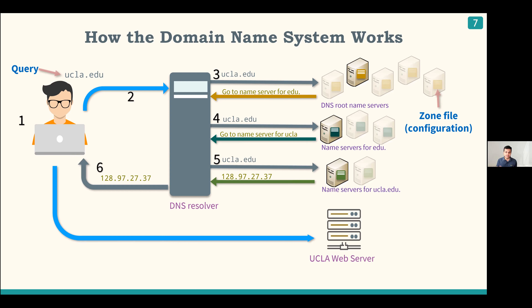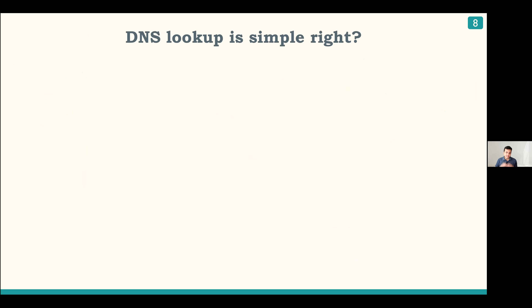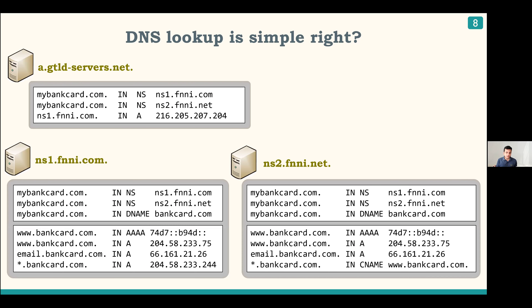In the whole query resolution process, there are three components of DNS involved: the resolver, the name server software, and the zone files. What I'm showing on this slide are example zone files for banker.com and mybanker.com across three name servers. Each zone file holds a list of resource records that describe how to look up answers for queries directed to those domain names.